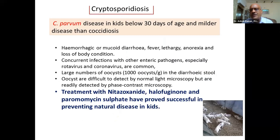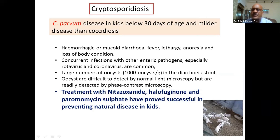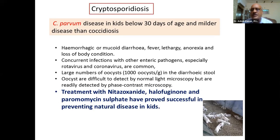Cryptosporidiosis is another important cause of neonatal diarrhea, especially in kids aged 1–3 days. It can cause explosive problems on farms when the infection load is high — over a thousand oocysts per gram. It is a protozoan identified by fecal examination. Specialized drugs are required for treatment: nitazoxanide, halofuginone, and paromomycin have proven successful. If the oocyte load is small, it may pass without being identified as the cause.